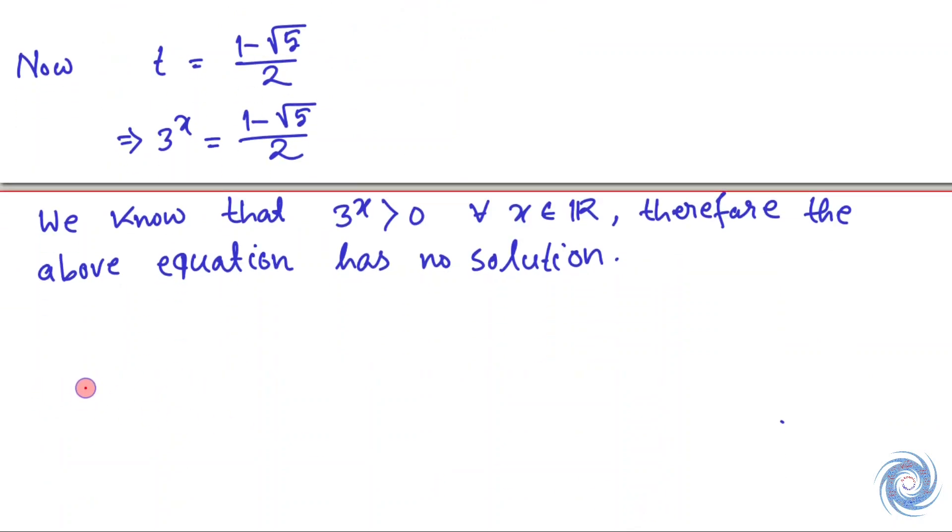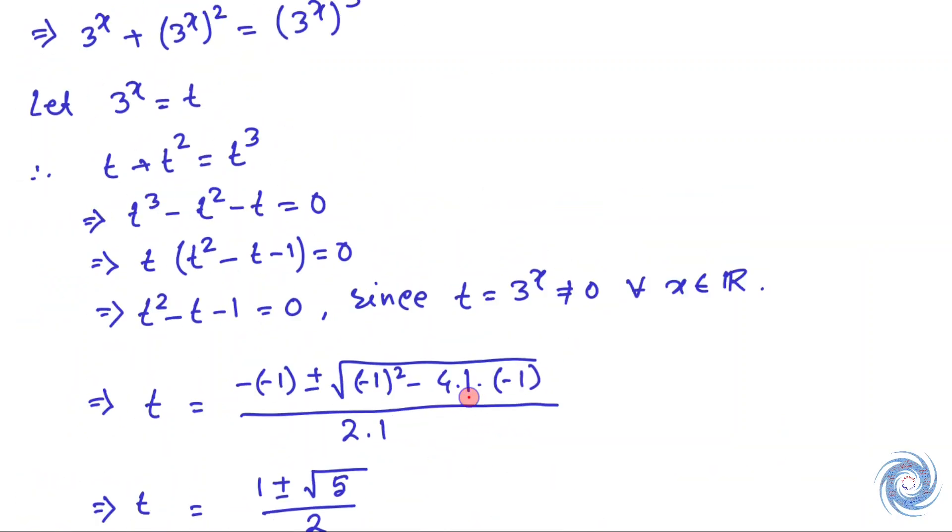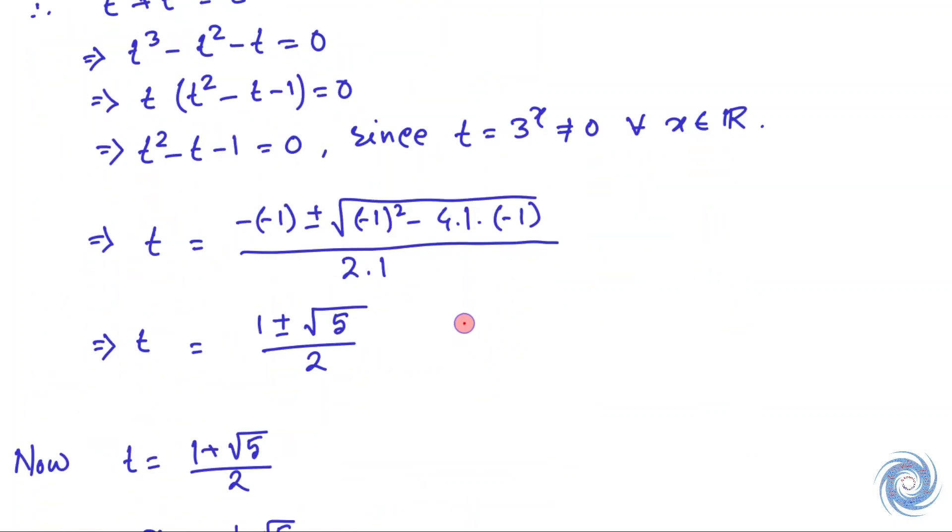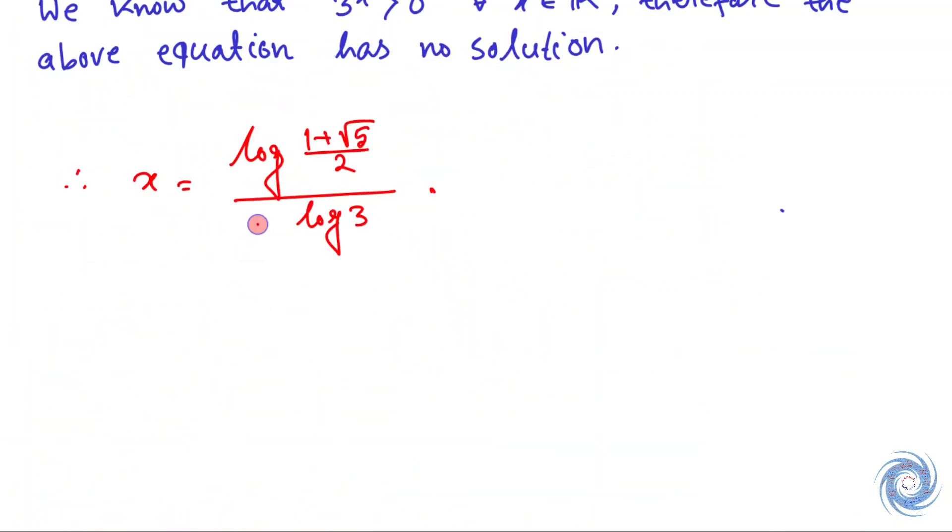Therefore, the solution is x equals log of one plus square root of 5 over 2, whole divided by log 3. This is the only solution. Here we are supposed to solve this equation for x, and the solution is given by this one.